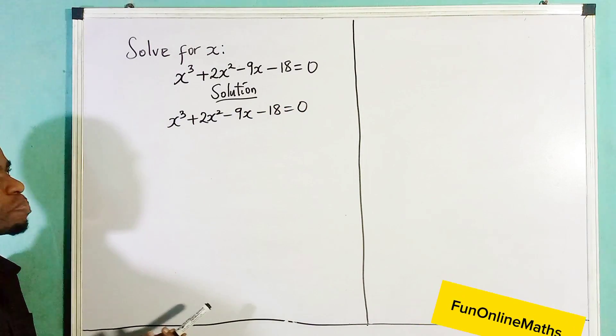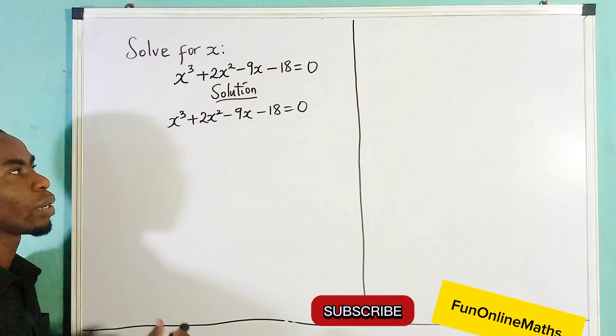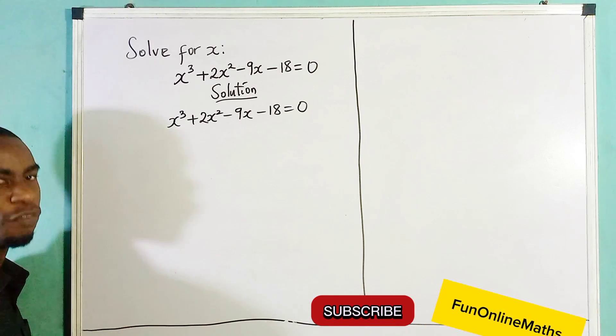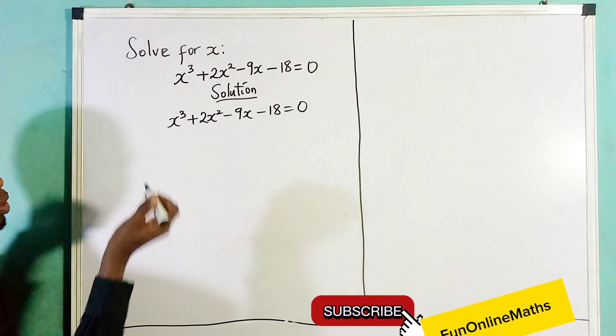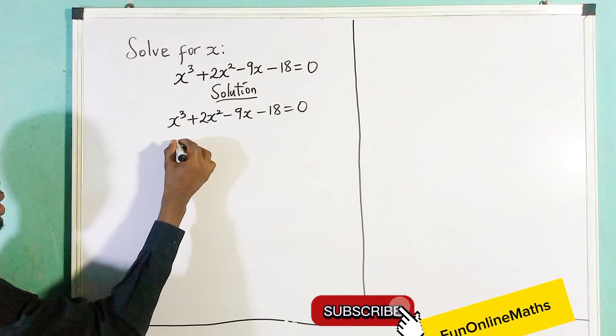Now the first thing we do, why not put them in brackets? I'm going to try to factorize this problem and then we'll get our values for x. So let's put them in their brackets.